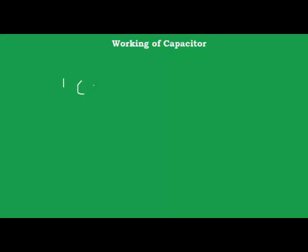First, let me explain what is meant by capacitance. The capacitance C of a conductor will be equal to the charge Q given to the conductor over the potential developed across the conductor. So the capacitance C is equal to Q over V. The unit of capacitance is farad.